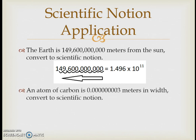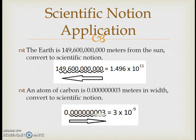Scientific notation also works for really small numbers. An atom of carbon is 0.000000003 meters in width — a lot of zeros to work with. We can shrink it down by moving those zeros to the right. We made that number 10 to the 9th times larger, so we multiply by something to make it 10 to the 9th times smaller, writing it simply as 3 times 10 to the negative 9 meters in width.